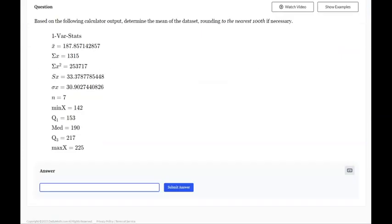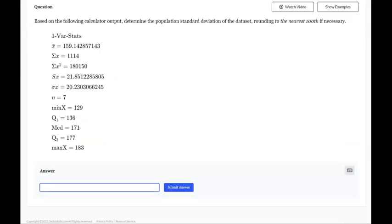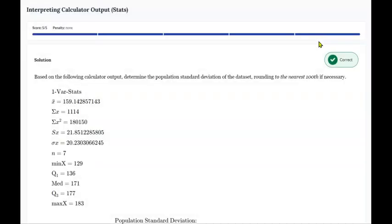And one more time, let's see. The mean is the X bar, rounding to the nearest hundredth. So that would be 187.86. Let's see if I can get a standard deviation question. Yeah, here we go. I'll determine the population standard deviation. So again, remember, this one is the population standard deviation. So I'm going to round it to nearest hundredth. So that would be 20.23. 20.23. And that concludes the last question for homework number 12.